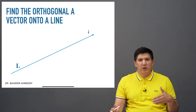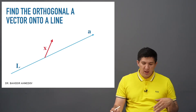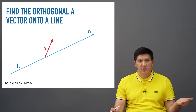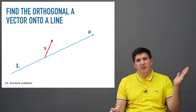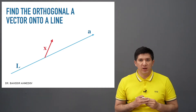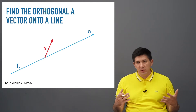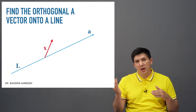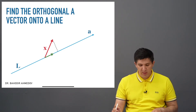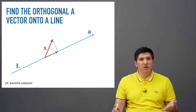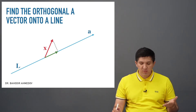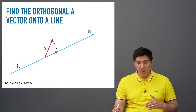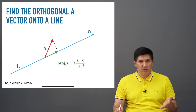Let's say we are given a line using some vector a, and we are given another vector x. We would like to find the projection of this vector x — the red vector x — onto this line, which is associated with vector a. It is called the orthogonal projection, and the meaning is that we connect the line and the vector with an orthogonal line, and then we draw this green vector on the line. This green vector is called the orthogonal projection of vector x onto the line. We are going to find this using the following formula.